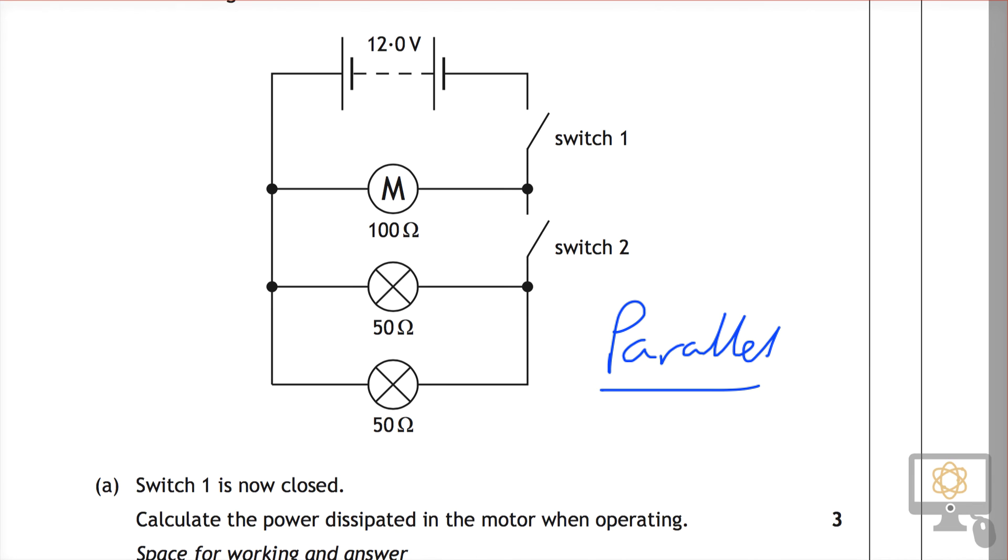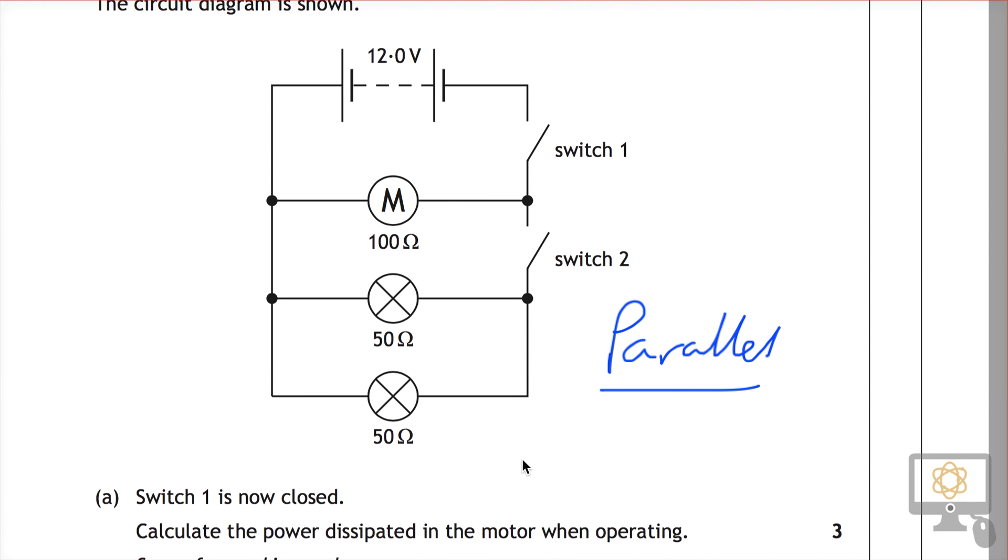There are other things that the marking scheme states. It says that the current has a path to go through the other lamp, that's correct. It also says that the voltage across this lamp is the same as it was before, which is correct because it's connected to 12 volts. And it says that the lamps are in parallel. And that's the most important point really.